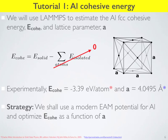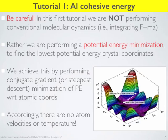We're going to use LAMMPS to do a potential energy minimization to find the relaxed crystal structure of aluminum. Once we have that, we can use the force field — a particular EAM force field — to evaluate the energy of our system and compare that to the energy if all the aluminum atoms were separated infinitely, which is going to be zero, giving us the cohesive energy of aluminum.